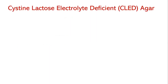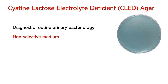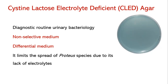CLED (Cysteine Lactose Electrolyte Deficient) agar is generally used for diagnostic routine urinary bacteriology. It is a non-selective agar capable of supporting the growth of most urinary pathogens — both gram-positive and gram-negative bacteria and yeast grow on it. It is also a differential medium differentiating lactose-fermenting from non-lactose-fermenting bacteria. It limits the spread of Proteus species due to its lack of electrolytes required for rapid flagellar movement.